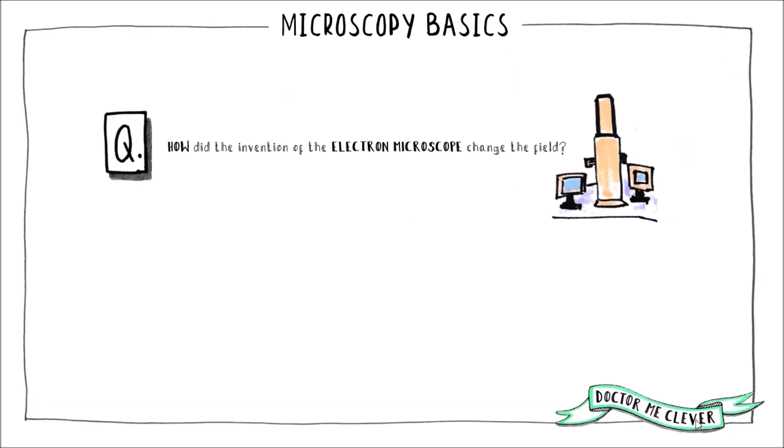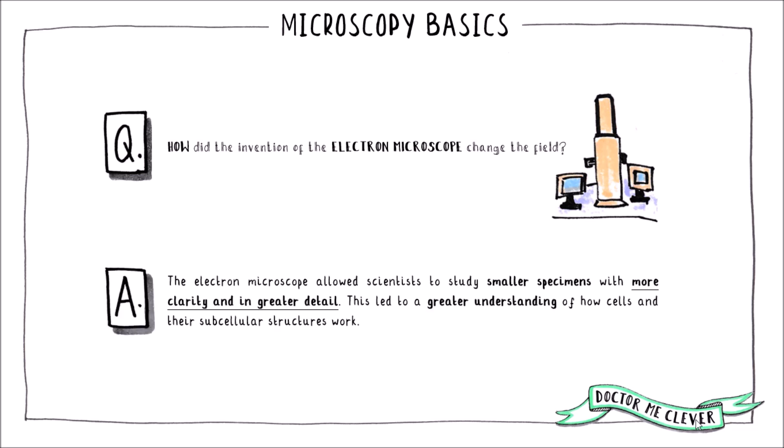You might get asked how advances in microscope technology have changed the field of biology or medicine. The answer is that the electron microscope has allowed scientists to study smaller specimens with more clarity and in greater detail. These advances have led to a better understanding of how cells and their organelles or subcellular structures work, leading to advances in research and our ability to treat many diseases.